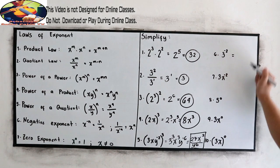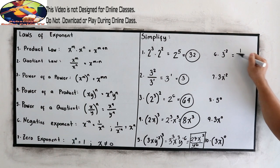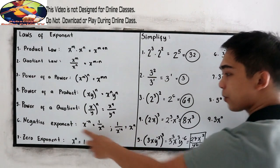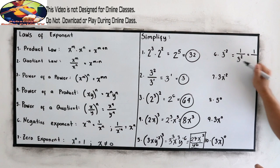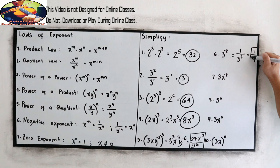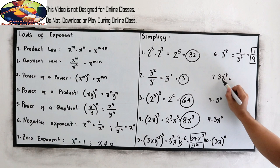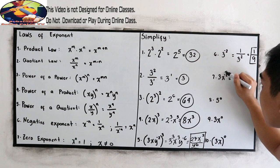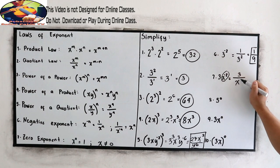Number 6: 3 raised to negative 2. Applying the negative exponent rule, this equals 1 over 3 raised to 2. Simplifying the denominator: 1 over 9. Number 7: 3x raised to negative 2. The negative exponent applies to the variable, so this equals 3 over x raised to 2.